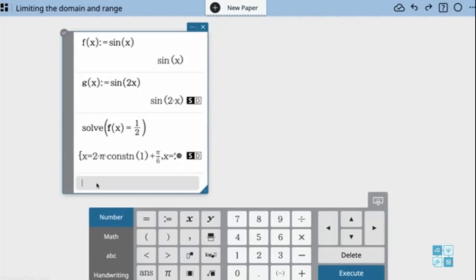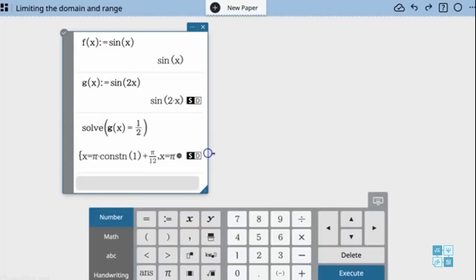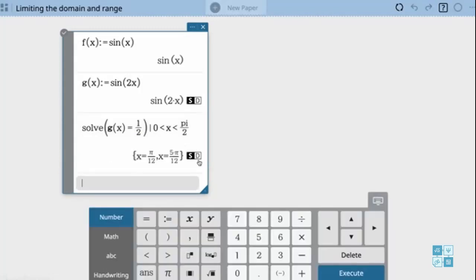So what I want to do is I want to solve g of x for the same thing. So I'm just going to recycle my previous equation and get my g of x solutions. Now I want to limit my domain for my solutions. Let's say I only want to look where we're looking between zero is less than x which is less than pi over 2. So now my domain has been limited. So now you notice my solutions have changed.